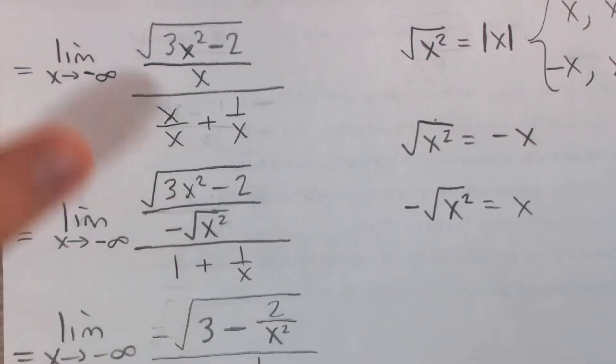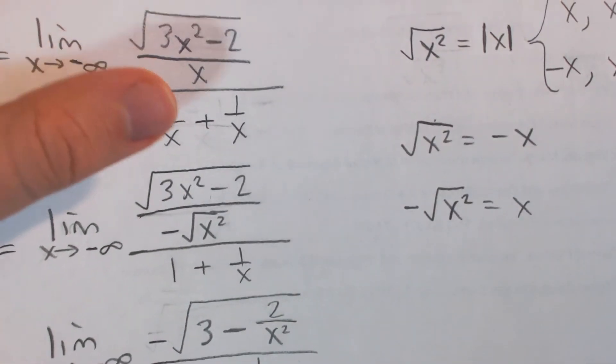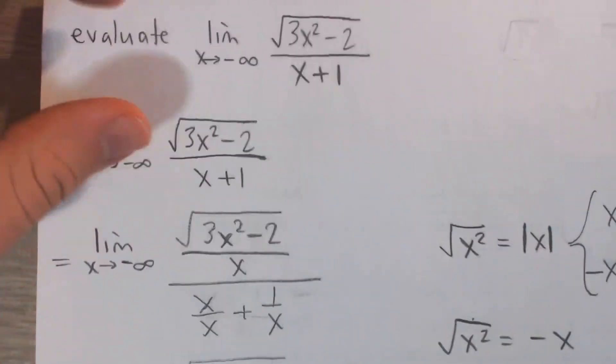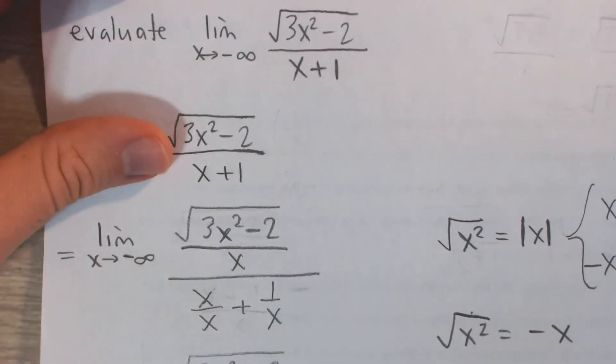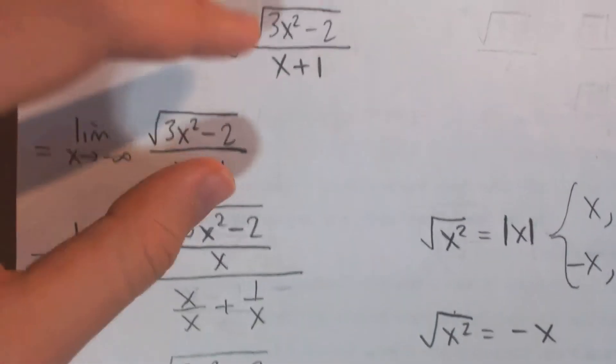And so that is kind of the rigorous algebraic technique to do it. A little bit of a shortcut that if, say, I didn't have to show all the steps, maybe you don't even have to show the steps. This is what I would kind of think about this as.